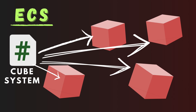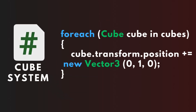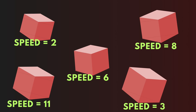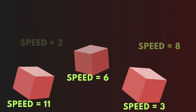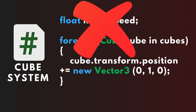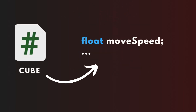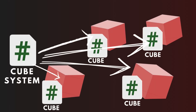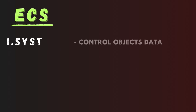You can have multiple systems, but each system handles just one functionality. In the system, you loop through all of the cube objects and change their positions. If each cube should move at a different speed, you won't put that variable into the system. Instead, you create a component called Cube, which you put on all the cubes to store that data. The first of the three main parts of ECS are systems, which control many objects.